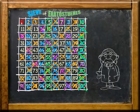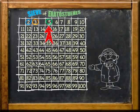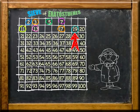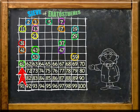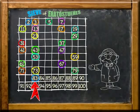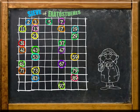Our prime numbers between 2 and 100 are 2, 3, 5, 7, 11, 13, 17, 19, 23, 29, 31, 37, 41, 43, 47, 53, 59, 61, 67, 71, 73, 79, 83, 89, and 97.